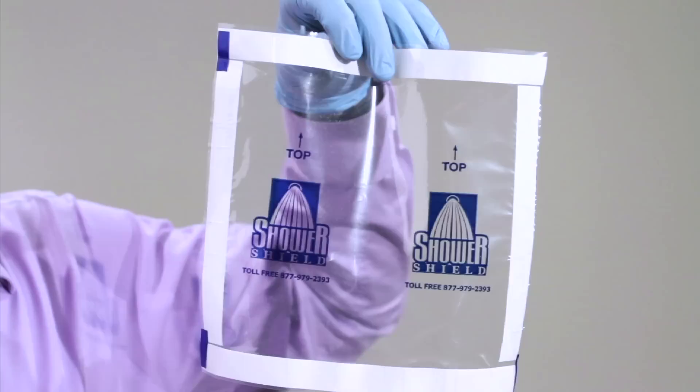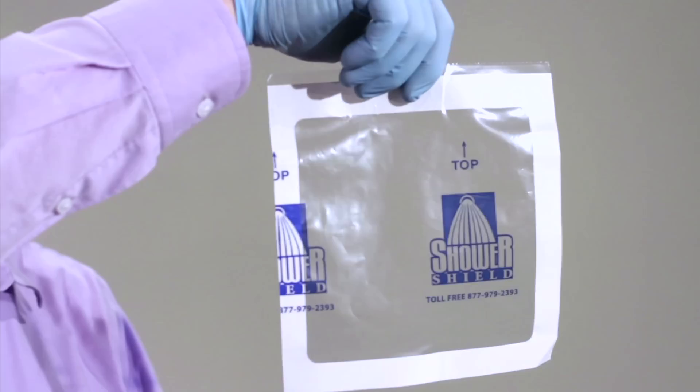As you can see, Shower Shield is a large dressing and it comes in a variety of sizes, with 7 inch by 7 inch and 9 inch by 9 inch being the most popular.